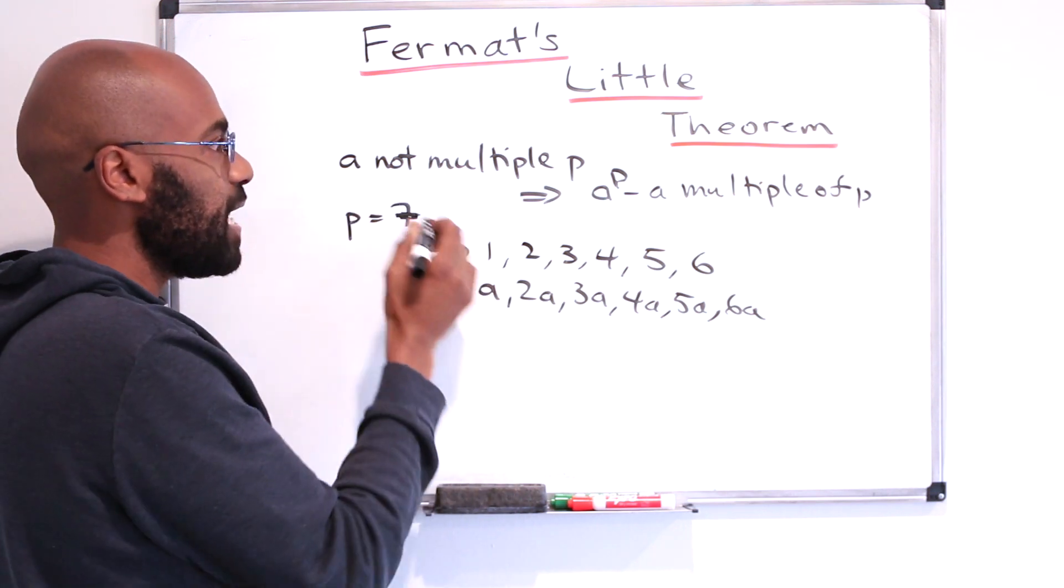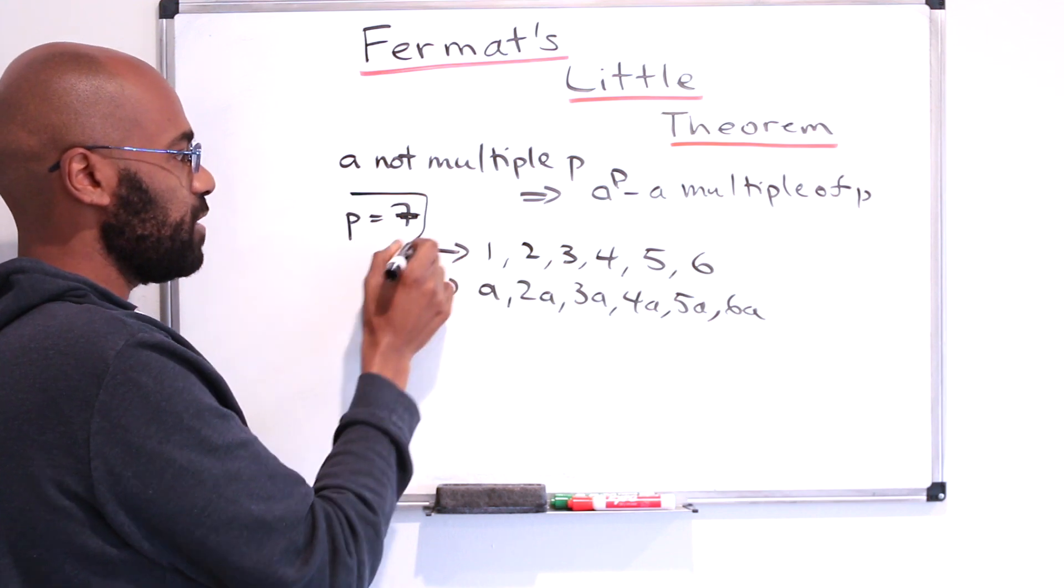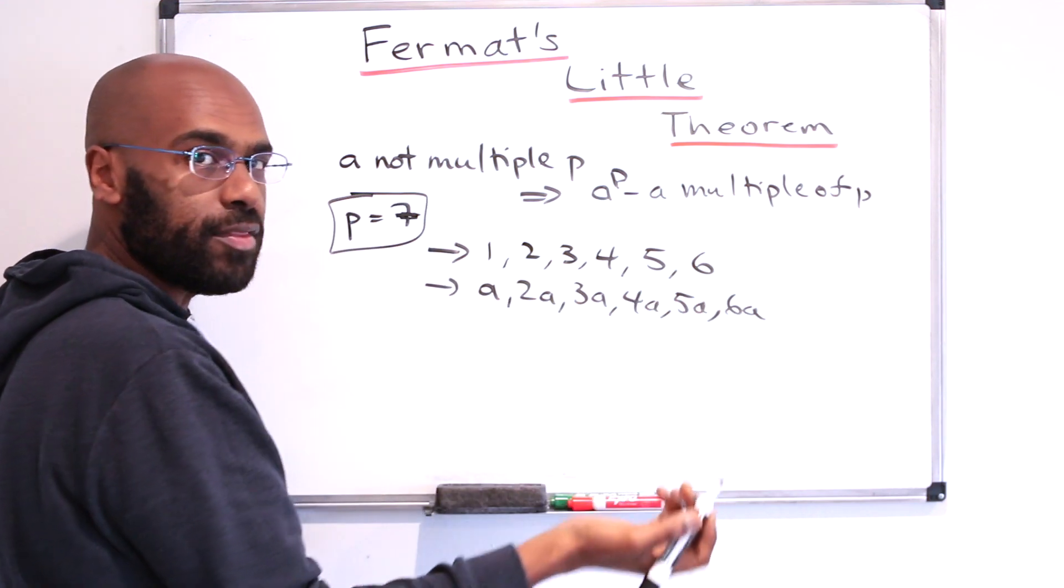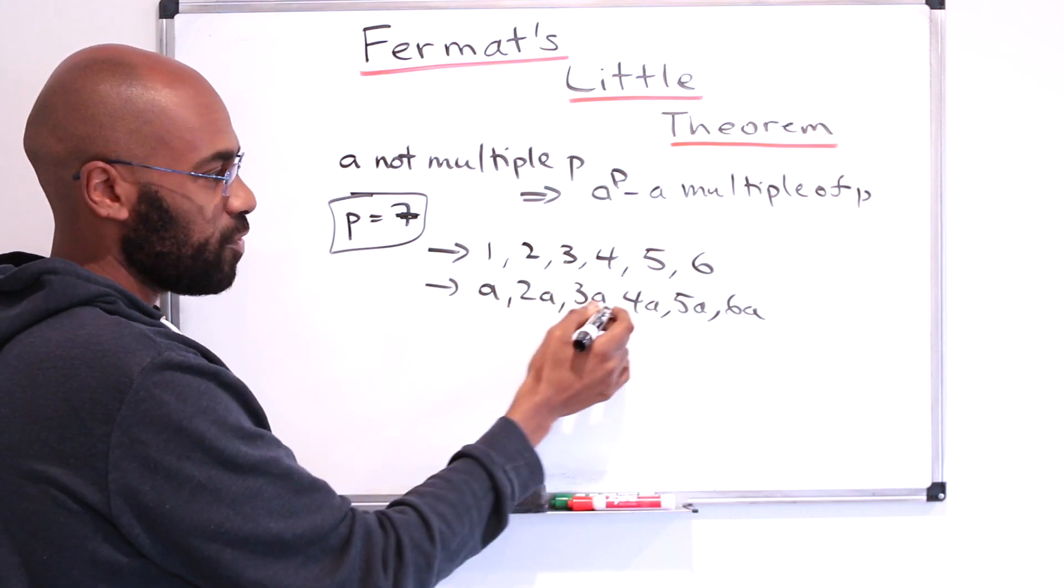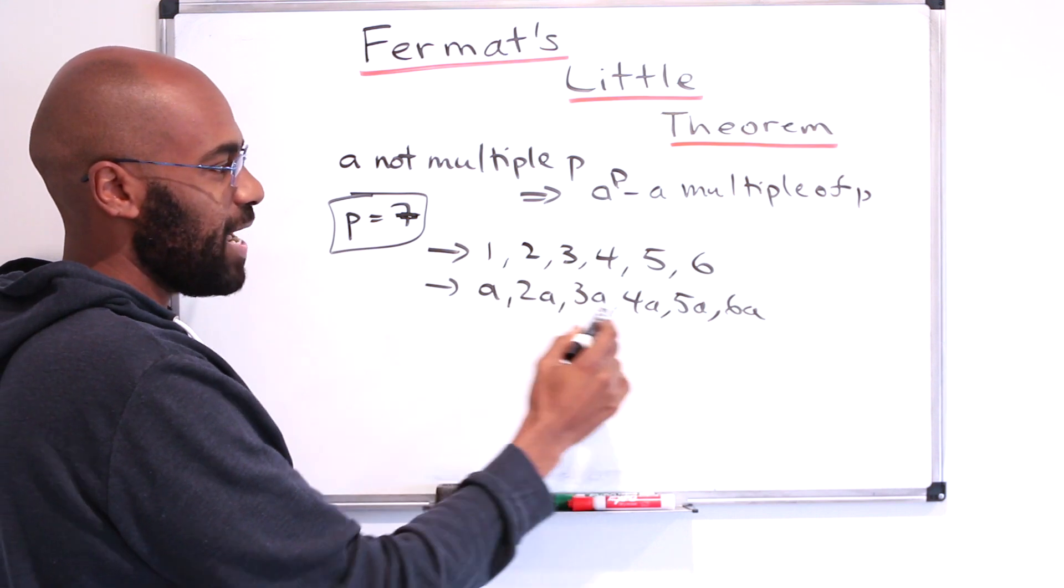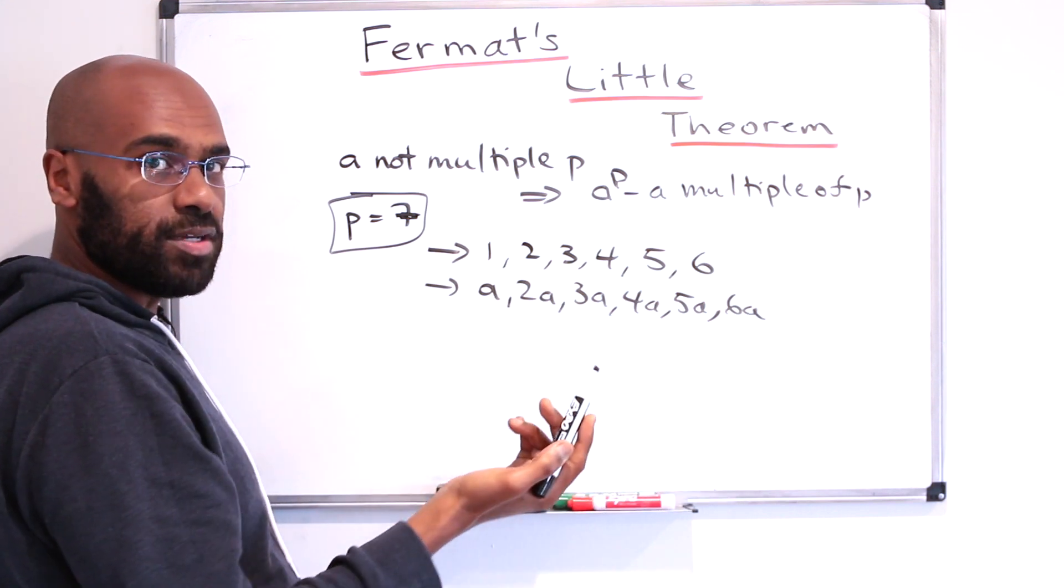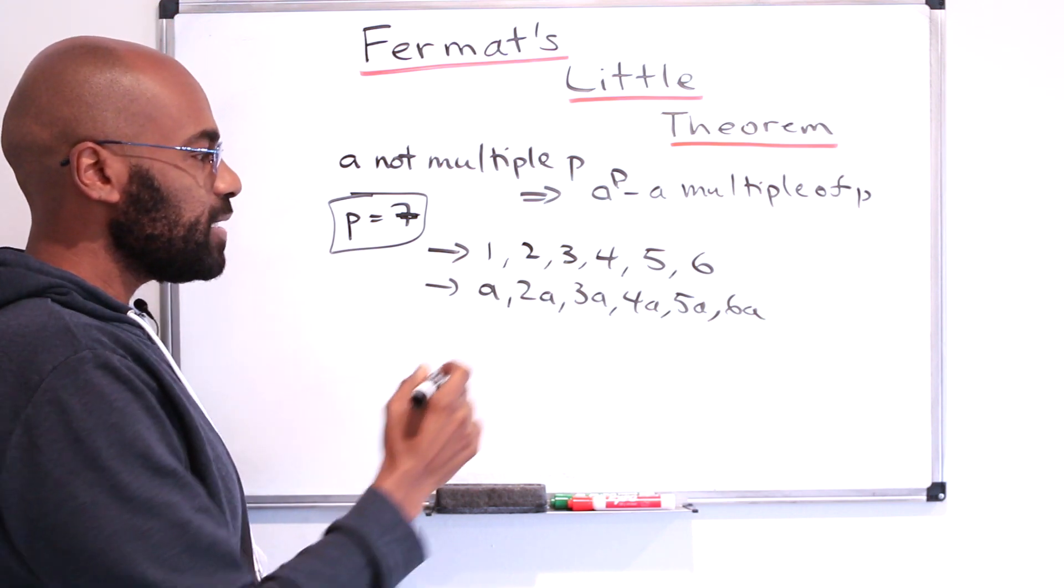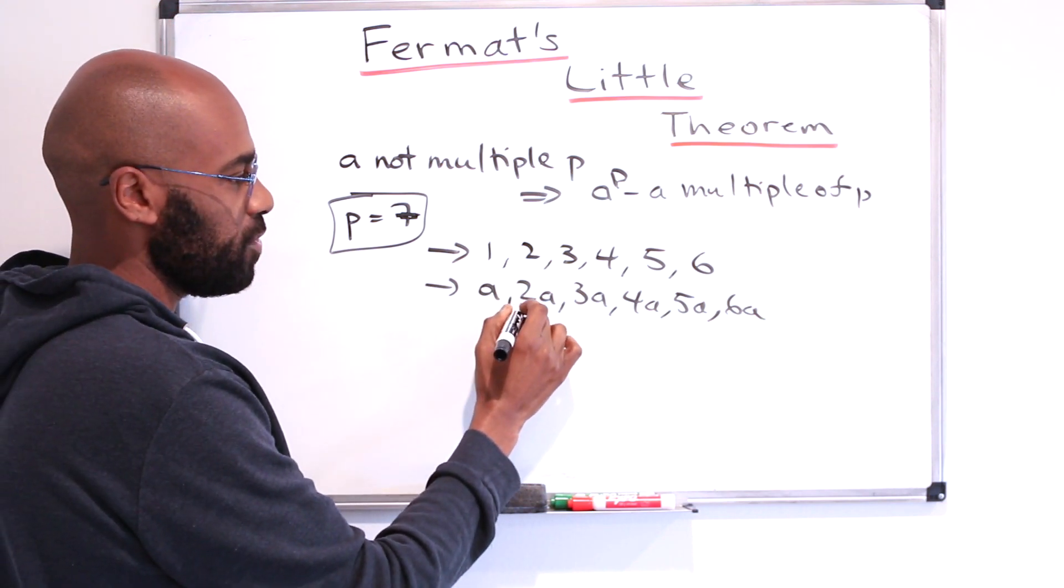Since a is not a multiple of 7, none of these numbers are a multiple of 7 either. They don't have a factor of 7 in them at all. So what I want to do is investigate what happens when we divide these numbers by 7. What are the remainders that we can possibly get? Well, let's say two of these had the same remainder.